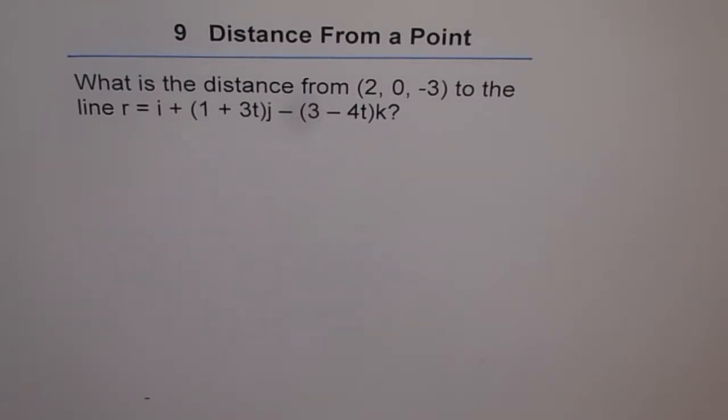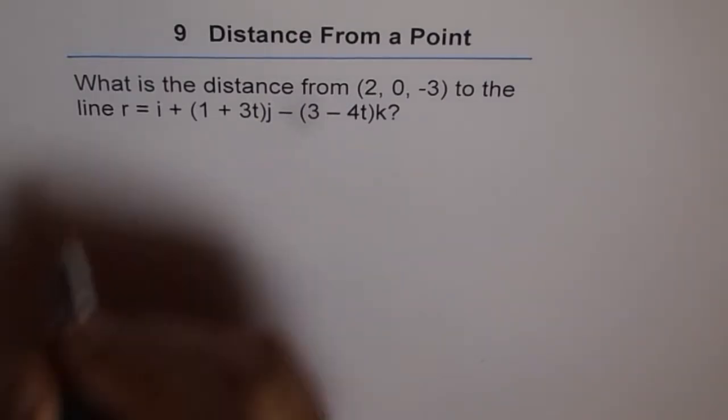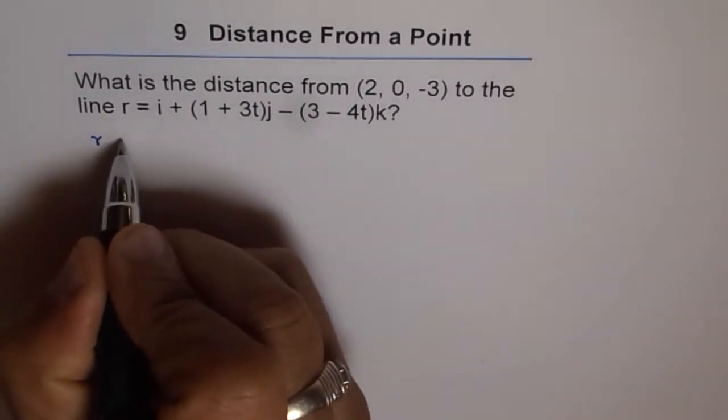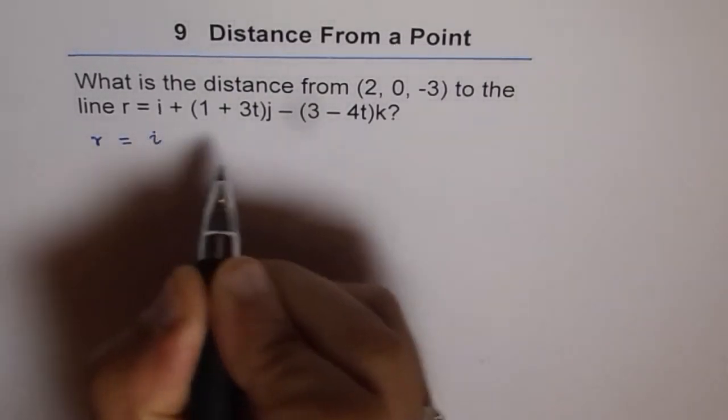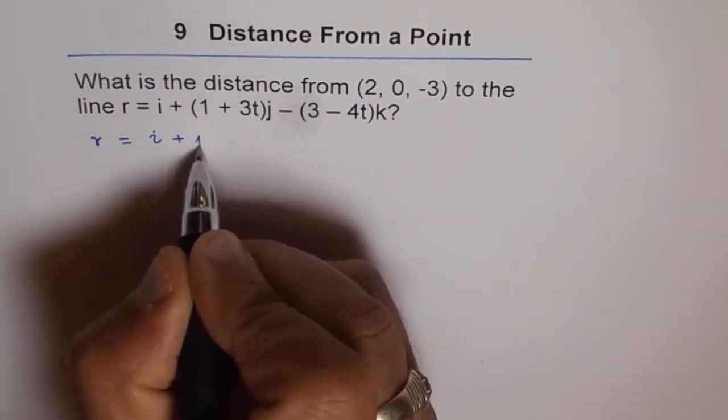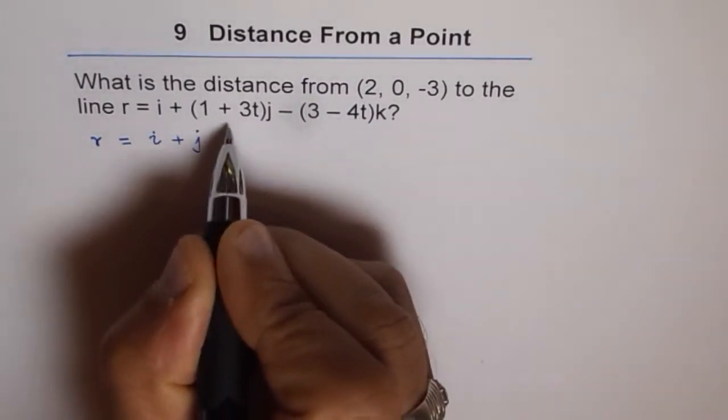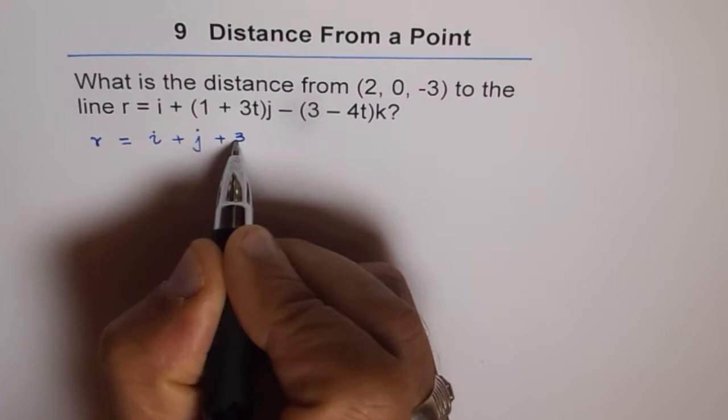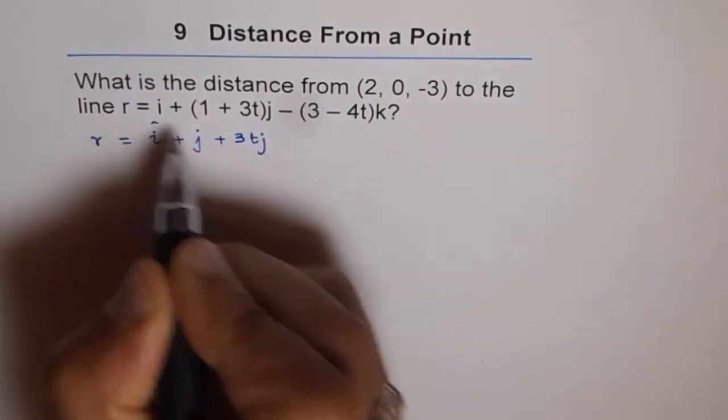That is an interesting question. We need to find distance from a given point to a line in vector form, but kind of mixed up vector form. So let's first write down this equation in a more familiar way. And then we'll figure out the distance. So the line equation can be written as r = i plus, we'll multiply by j here, plus 3tj.